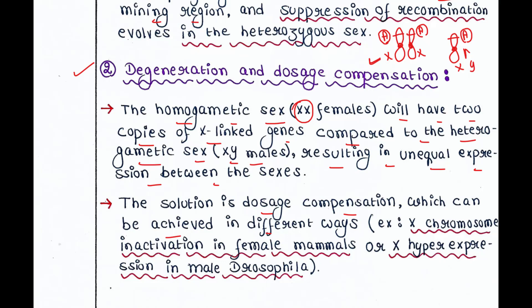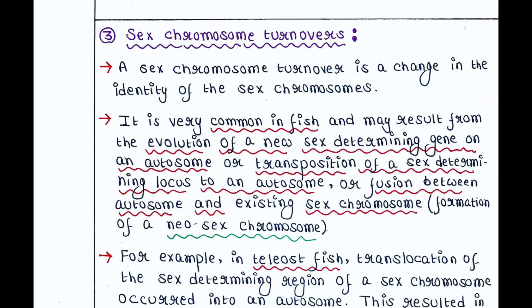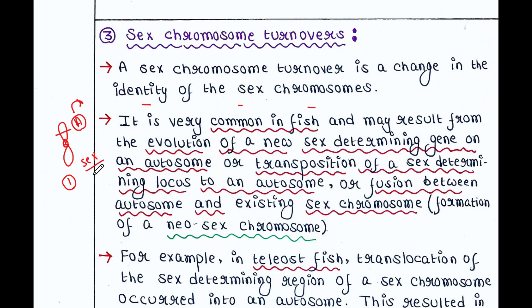Next is sex chromosome turnovers. A sex chromosome turnover is a change in the identity of the sex chromosomes. It is very common in fish and may result from the evolution of a new sex-determining gene on an autosome — for example, an autosome gains a new gene directly associated with sex determination and thus becomes a sex chromosome.